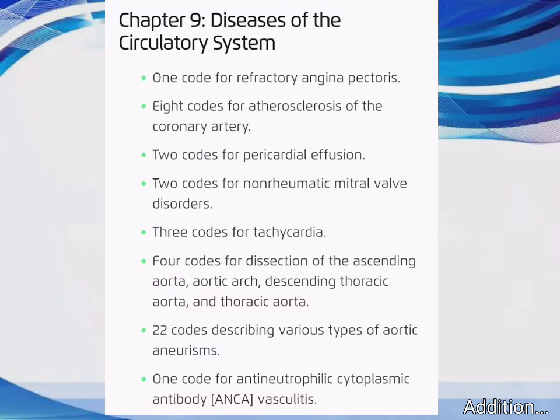Chapter 9 – Diseases of the Circulatory System: 1 code for Refractory Angina Pectoris, 8 codes for Atherosclerosis of the Coronary Artery, 2 codes for Pericardial Effusion, 2 codes for Non-Rheumatic Mitral Valve Disorders, 3 codes for Tachycardia, 4 codes for Dissection of the Ascending Aorta, Aortic Arch, Descending Thoracic Aorta, and Thoracic Aorta, 22 codes describing various types of Aortic Aneurysms, and 1 code for Antineutrophilic Cytoplasmic Antibody (ANCA) Vasculitis.